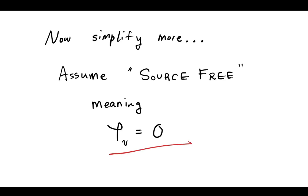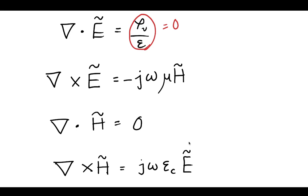Now, if you have a source-free environment, like where a wave is just propagating through space, we'll write that this rho v is equal to zero. Now this simplifies the Gauss's law for electrostatics down to zero.